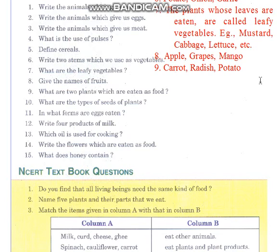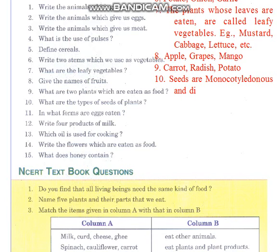After that, the tenth question: what are the types of seeds of the plant? Seeds are monocotyledonous and dicotyledonous. Dicotyledonous and monocotyledonous — these are the types of seeds. Monocotyledonous has one part; like a chana grain can be split into two parts — that is called dicotyledonous. And monocotyledonous cannot be split into two parts. Okay.